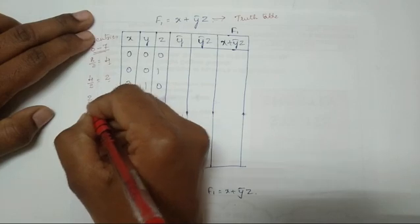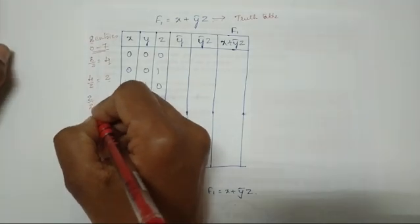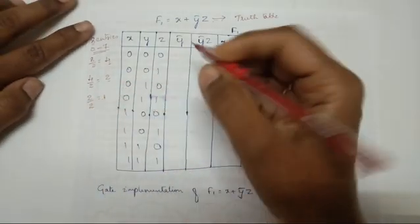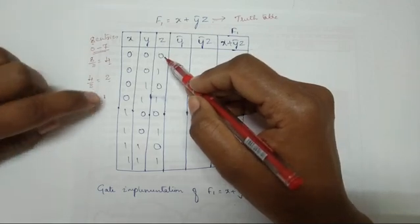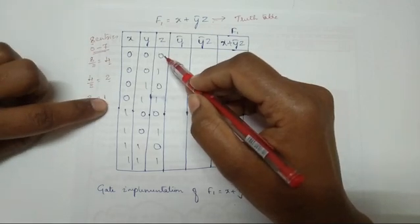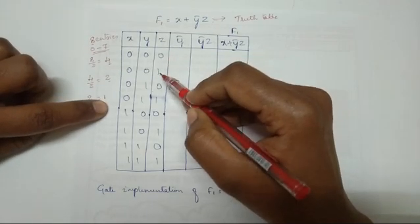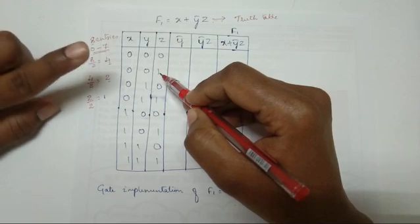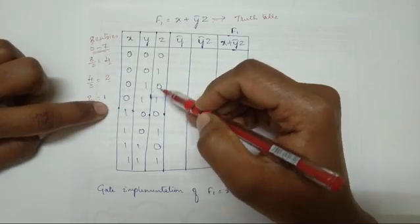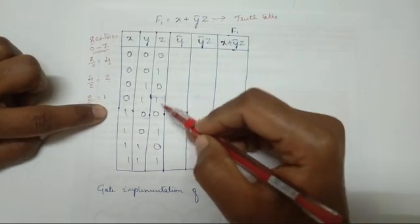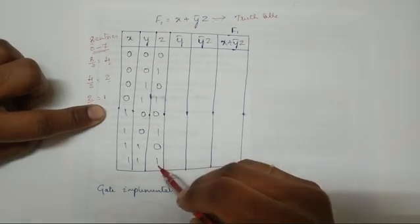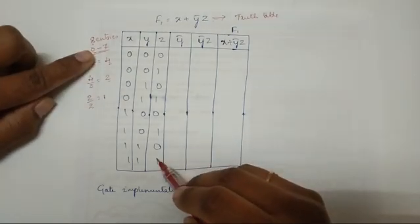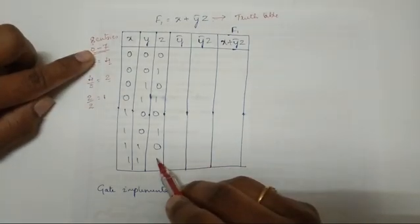For the z column, divide 2 by 2 to get 1. Always start from 0, writing alternately: 0, 1, 0, 1, 0, 1, 0, 1 — one zero and one one repeated throughout the column.